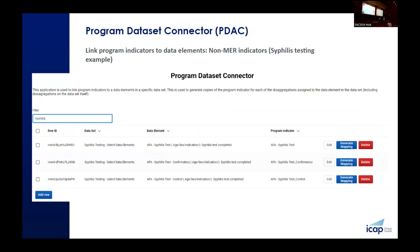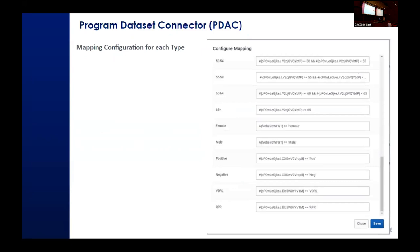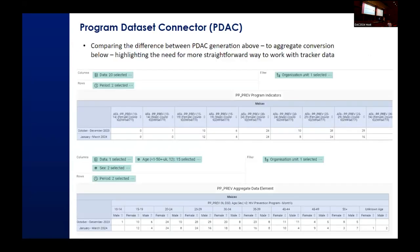Here's another screenshot of a non-mirror indicator — in this example, syphilis. We did the same thing where we had to have all these different combinations, and PDAC magically did all the mapping for us. The top table shows the program indicators — every indicator and every combination — and by putting it in that format, we were able to very easily use the Data Visualizer to give us the look that we need. For priority populations, we can nicely show the data by age, gender, and time period.